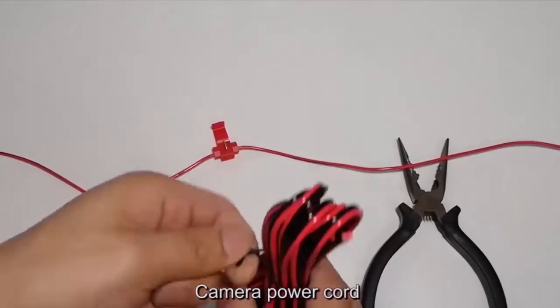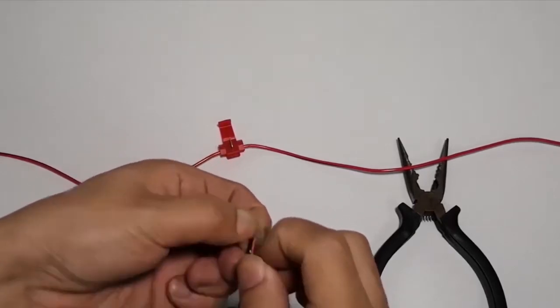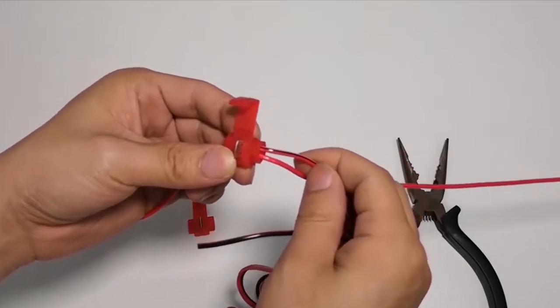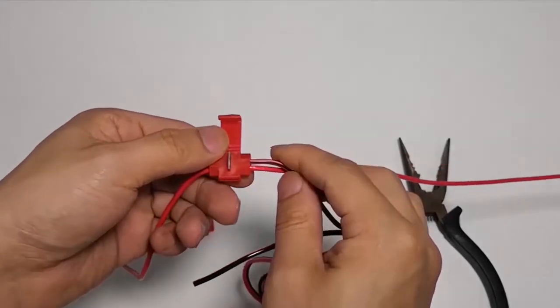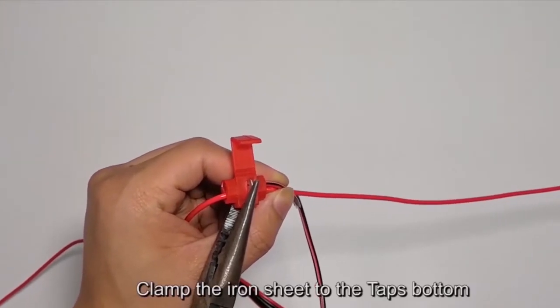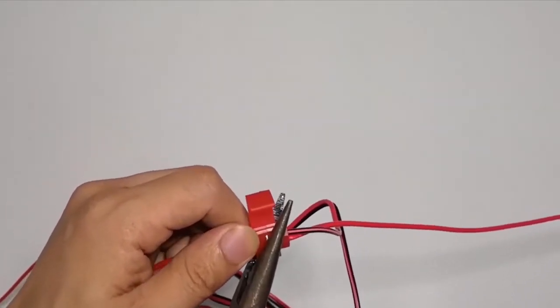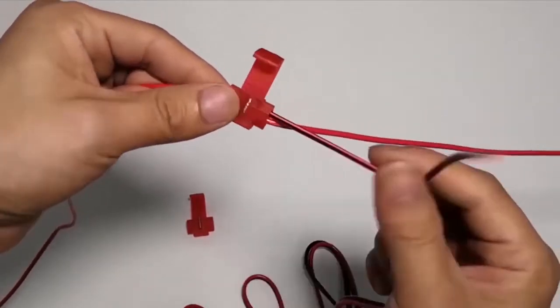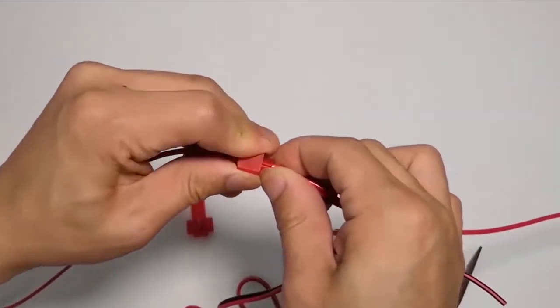Camera power cord. Plug the power cord into the second hole. Iron sheets. Clamp the iron sheet to the tap's bottom. Clamp the iron sheet. Cover the iron sheet.